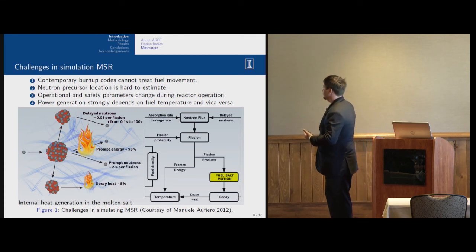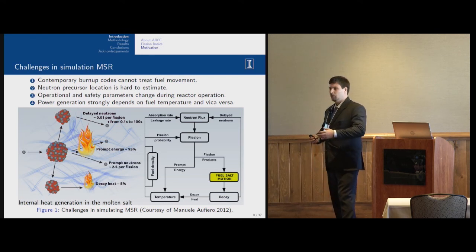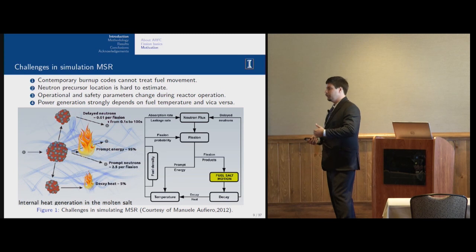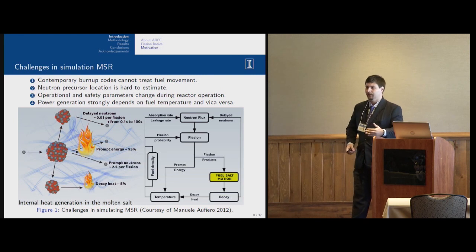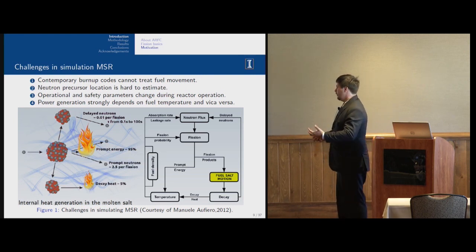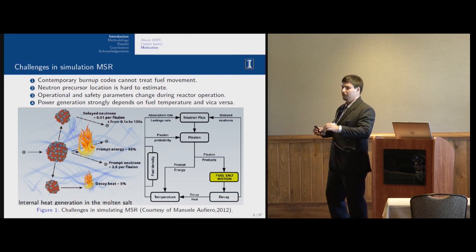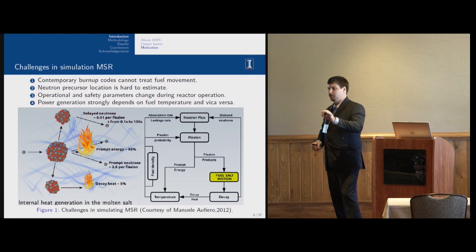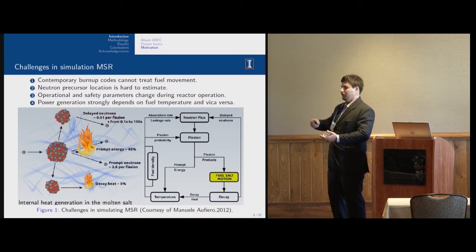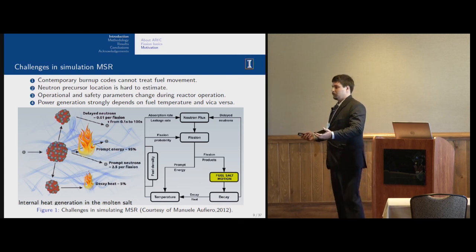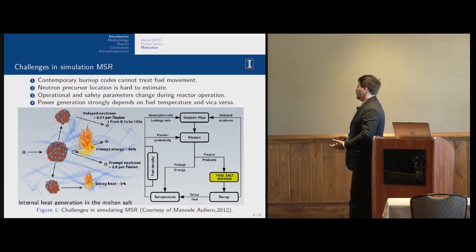But in case of molten salt reactors, we have to take into account delayed neutrons. After fission happens, we have two unequal atoms which are radioactive. Some of them can emit a neutron, not immediately, not promptly like in the case of fission, but after that. Time could be a few milliseconds or even one minute. In case of solid fuel, we know these delayed neutrons will be emitted exactly where fission takes place. But in case of liquid fuel circulating in the primary loop, it can emit neutrons in the pipe or in a heat exchanger or somewhere in the core. To take it into account, we have to simulate fuel motion.